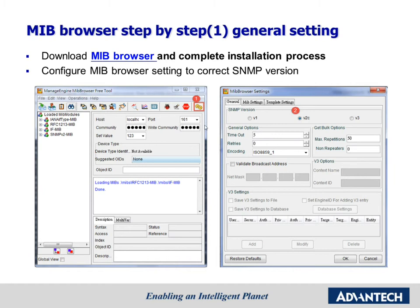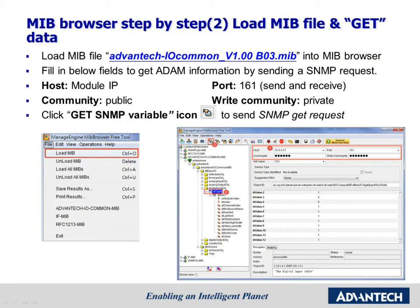First, press the gear button to configure MIB Browser settings, and then choose the SNMP version. In this example, we use v2c. Download the MIB file for the ADAM 6000 series from our website. Please note that it uses port 161 for sending and receiving. First, load the MIB file, and then enter the ADAM module's IP address in the host field. Second, choose the data you want to get. Let's send out the SNMP request by pressing the GET button. Finally, you can get lots of data from our module, like the image below shows.